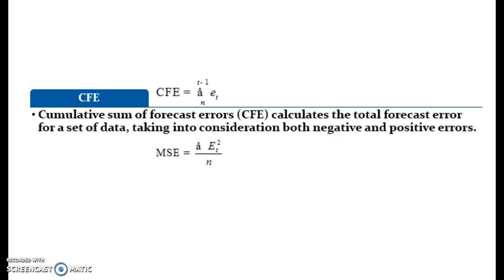Almost all forecasts will be wrong at some point — some higher than demand, some lower. Managing the forecasting process requires minimizing errors between actual and forecast demand, and the key is to choose the technique that provides the least forecast error. The first measure is the Cumulative Sum of Forecast Errors (CFE), which calculates total forecast error considering both negative and positive errors — also referred to as bias. Although it provides an overall measure, individual period forecasts can still be much higher or lower than actual demand.